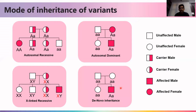The last mode is de novo inheritance. De novo means a new mutation. As seen in the pedigree, neither parent carries the capital A mutation. It arose as a new mutation in the germ cells of the parents, and this new mutation is causing the disorder. Such inheritance is known as de novo.